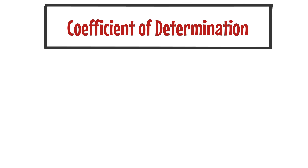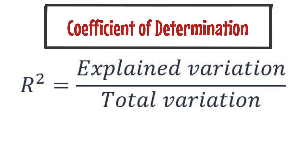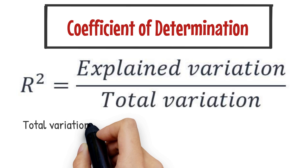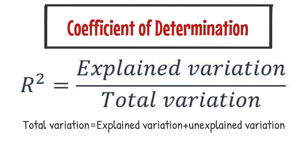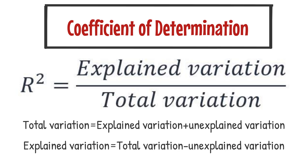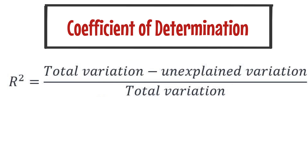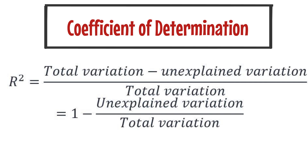The coefficient of determination measures the fraction of total variance in the dependent variable that is explained by the independent variable. R-squared is the fraction of total variation explained by the regression, equal to explained variation divided by total variation. Since total variation equals explained variation plus unexplained variation, we can rewrite r-squared as 1 minus unexplained variation divided by total variation.